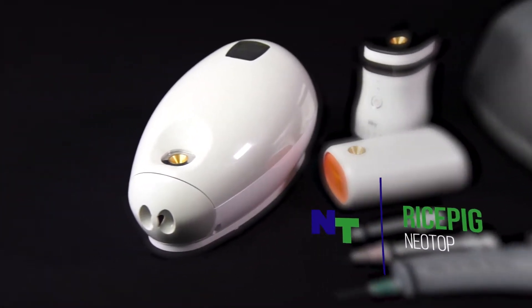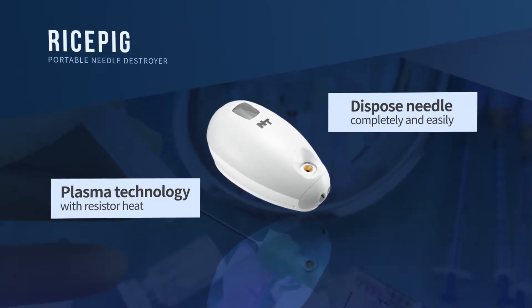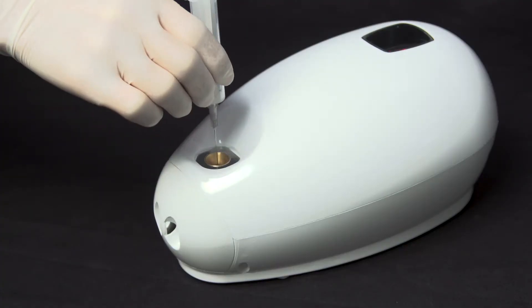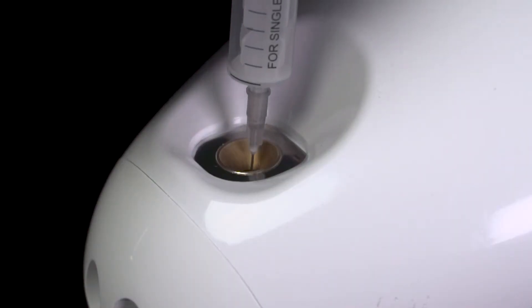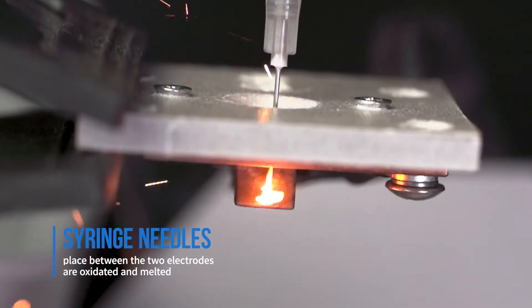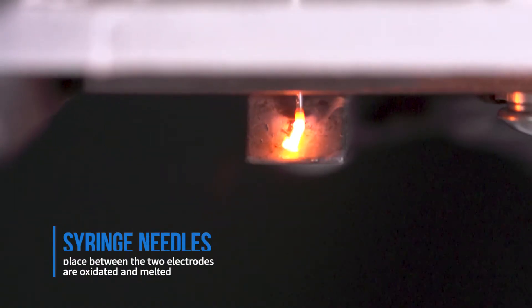RicePig utilizes plasma technology with resistor heat to quickly process used syringe needles safely. It is powered by a low DC current from a rechargeable battery and syringe needles placed between the two electrodes are oxidated and melted.